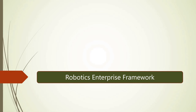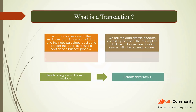Today we are going to start the Robotics Enterprise Framework right from scratch. Before jumping into the framework itself, I want to explain what exactly a transaction is. A transaction represents the minimum, smallest amount of data necessary to fulfill a business process — the bare minimum thing needed to do that process is called a transaction.